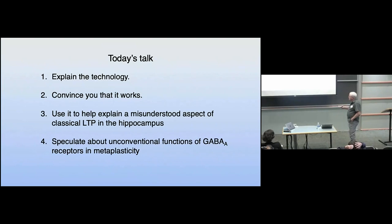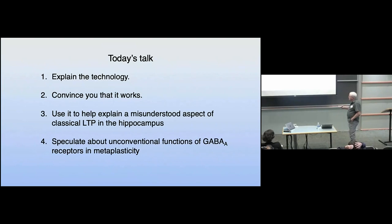GABA receptors are ligand gated ion channels that conduct chloride, and they are pentameric proteins, heteromultimers of five subunits. There are two alphas, two betas, and a non alpha beta, which is often a gamma subunit. And this protein binds GABA in two places at the interfaces between the alpha and the beta subunits. So what we want to do is make these receptors become sensitive to light.